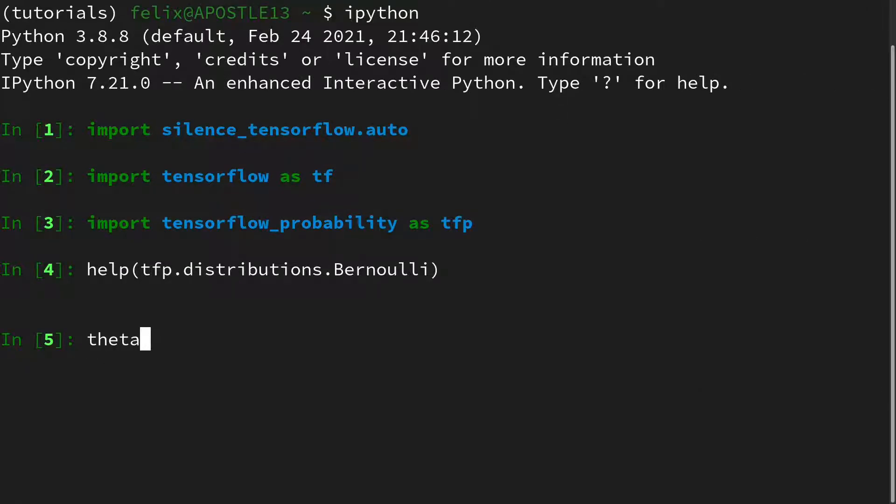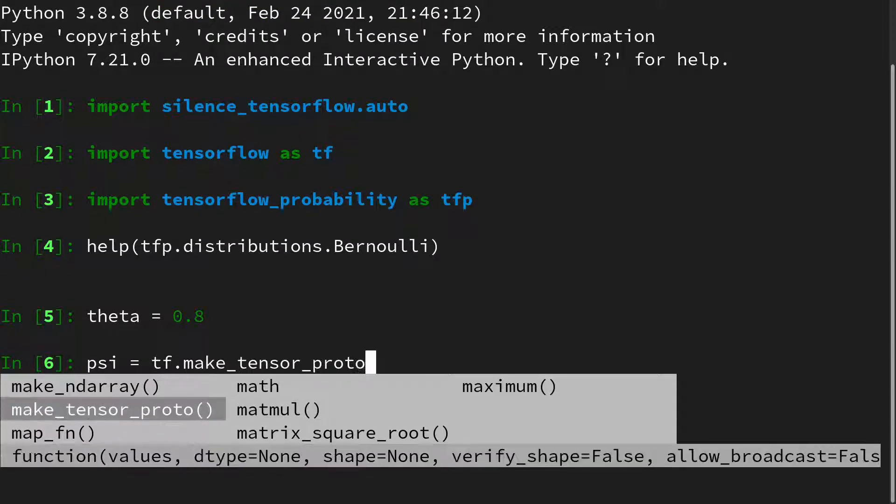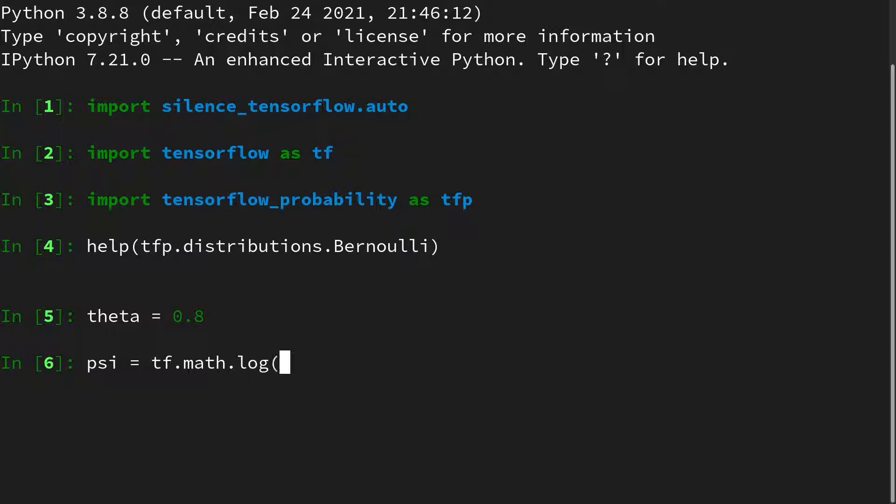Okay, let's say we have a theta. Let's say, for instance, we look at the observation of good weather and say it's 80% chance of good weather. Then we can define our psi with the mapping from a probability to a logit as tf.math.log of theta divided by 1 minus theta. If we look at psi, we see it's 1.386, so it would no longer be a probability.